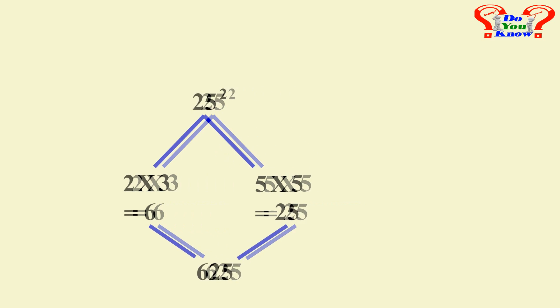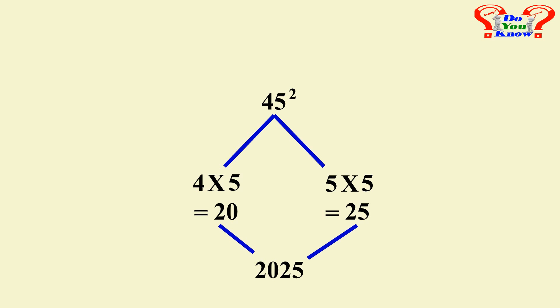Confused? Let's do one more example: 45 squared. Divide the number into two parts: 4 and 5. The square of 5 is 25. And multiply 4 with its next number, that is 4 times 5, which is 20. Join the two numbers. Now, the square of 45 is 2025.